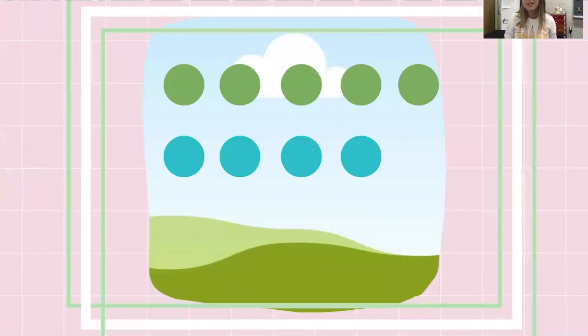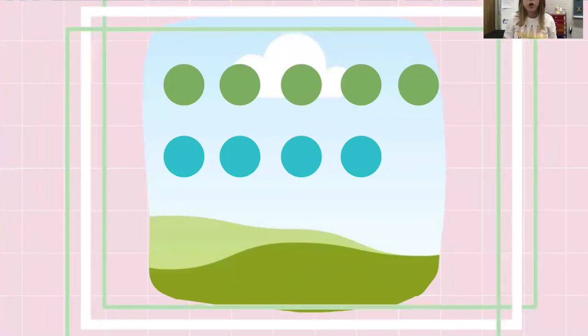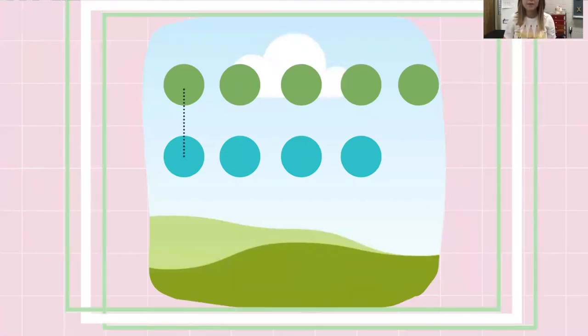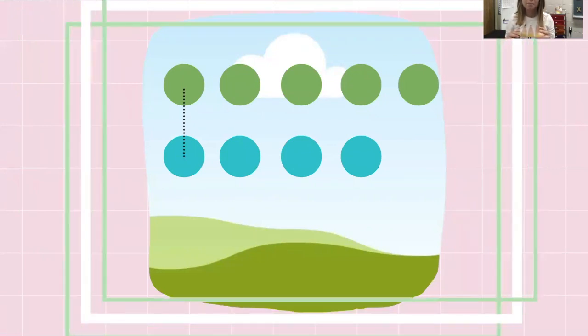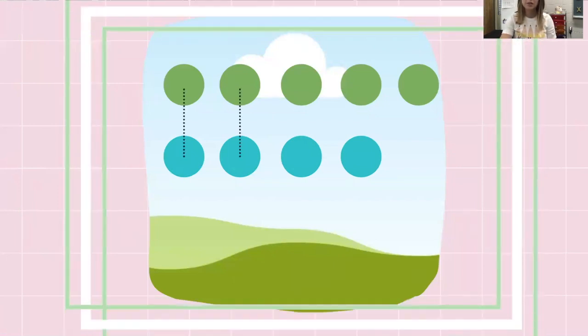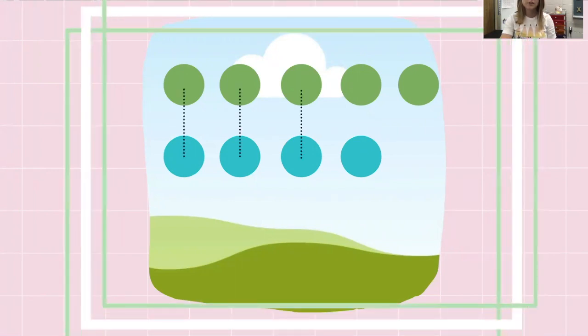Then I need to compare my groups. One way I can compare is drawing a line connecting one green to one blue like this. It's important that when I make my matches, I'm just matching one green to one blue. One green to one blue.